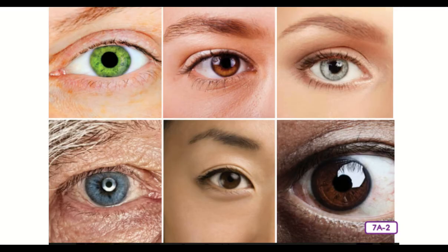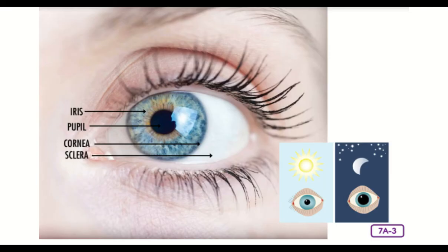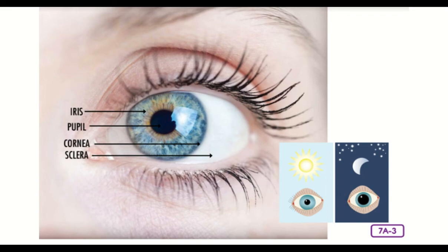What color were your neighbor's eyes? Did you notice? Look again. Let's find out — look at this picture together. The outer visible part of the eye includes the sclera, cornea, iris, and pupil. The white outer layer of the eye is called the sclera. The thin, tough, transparent tissue that covers the colored part of the eye is called the cornea, and it allows light to pass through. Together, the sclera and the cornea protect the eye from germs, dangerous particles, and damaging light rays.